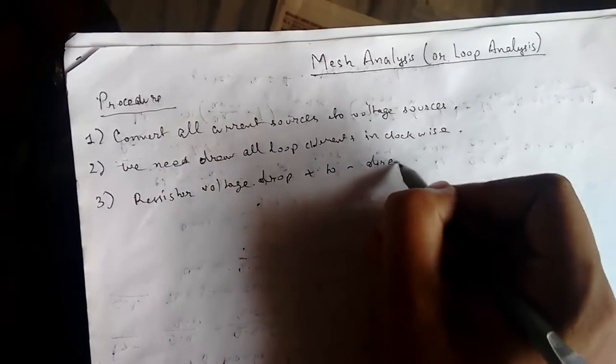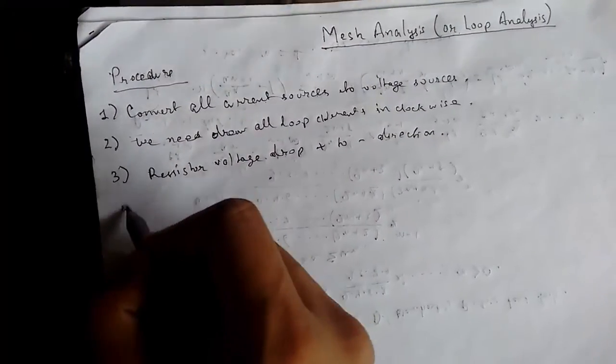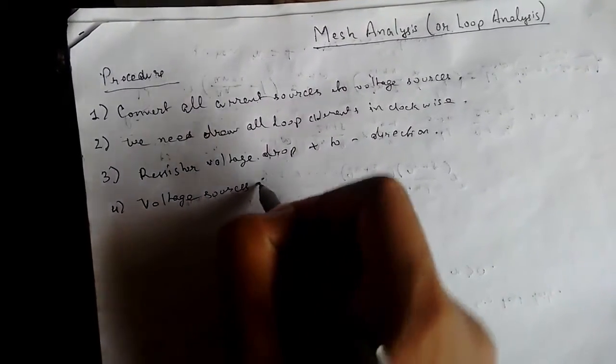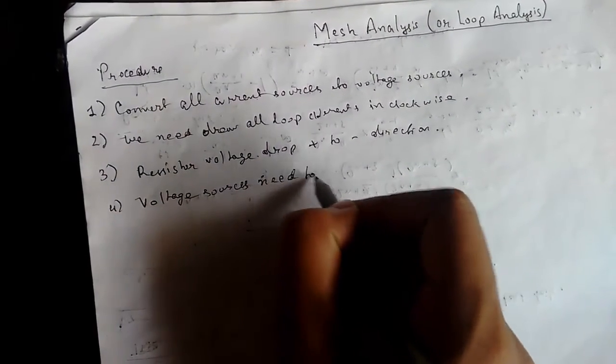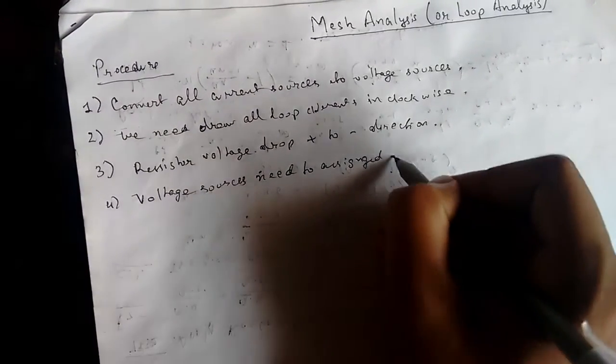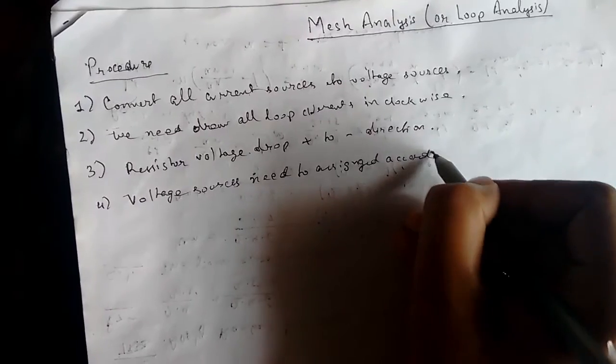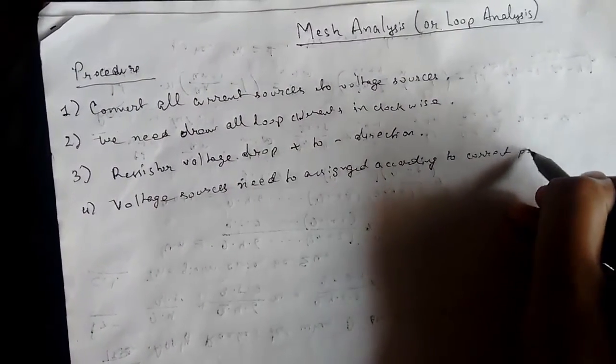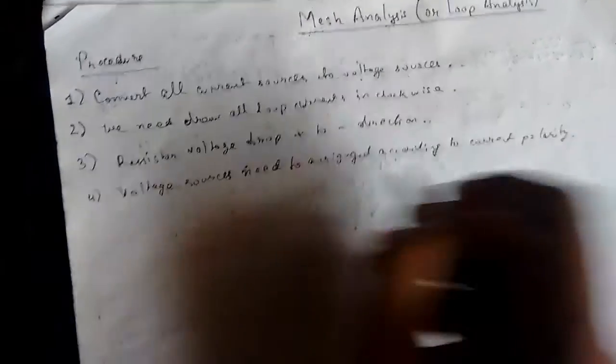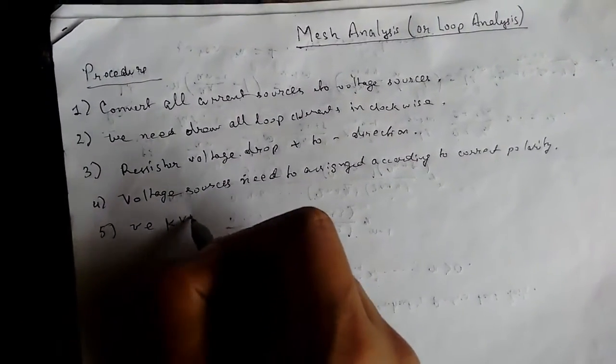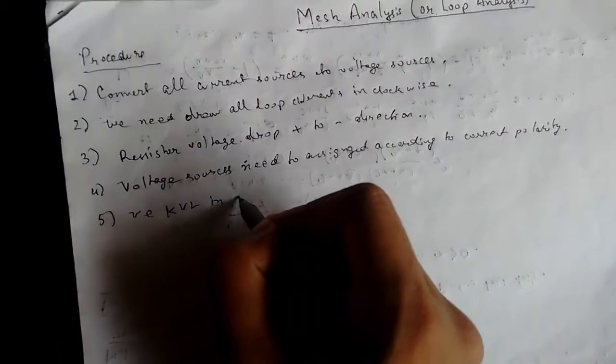Direction according to the loop current. Now for voltage sources, we also have to do the same - voltage sources need to be assigned according to correct polarity. Then we apply KVL in each loop.